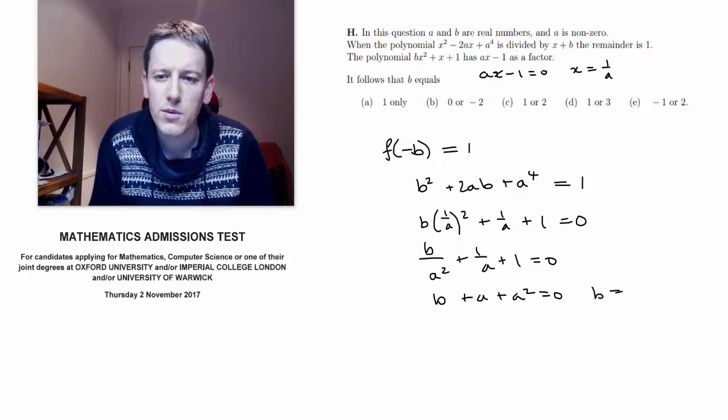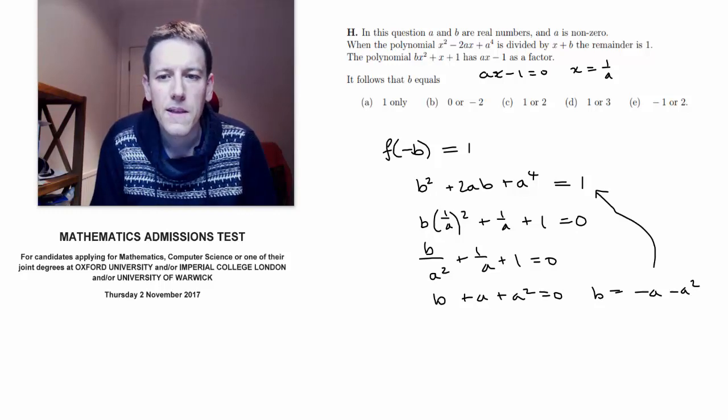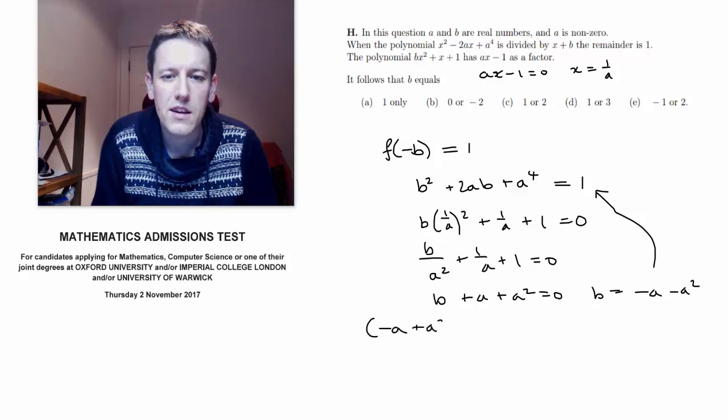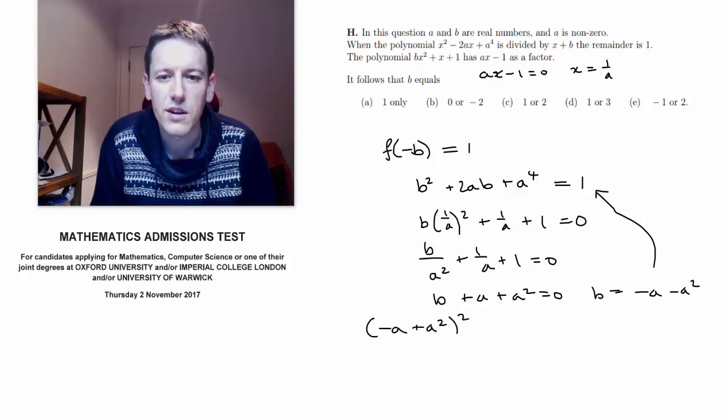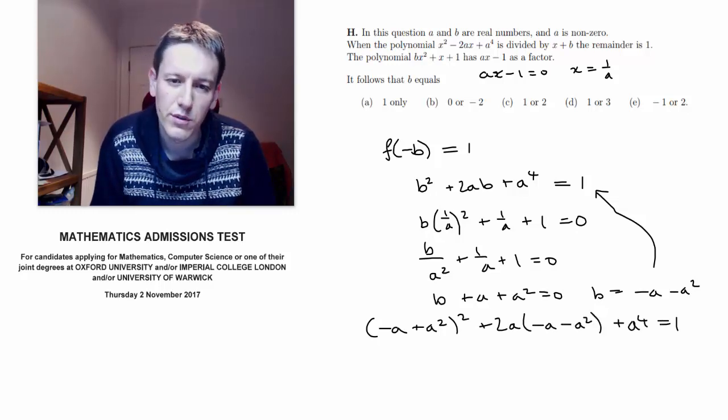And so I can substitute here, b equals minus a minus a squared back into here, so I've got minus a plus a squared squared plus 2a times minus a minus a squared plus a to the 4 equals 1.